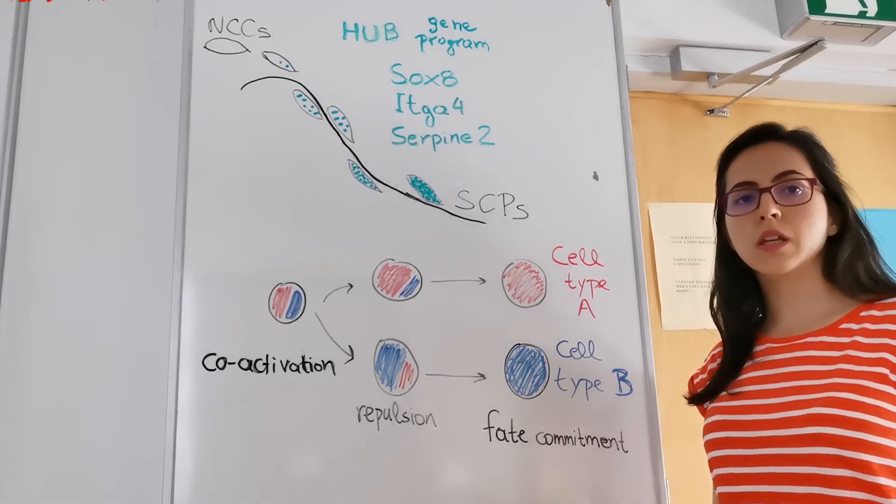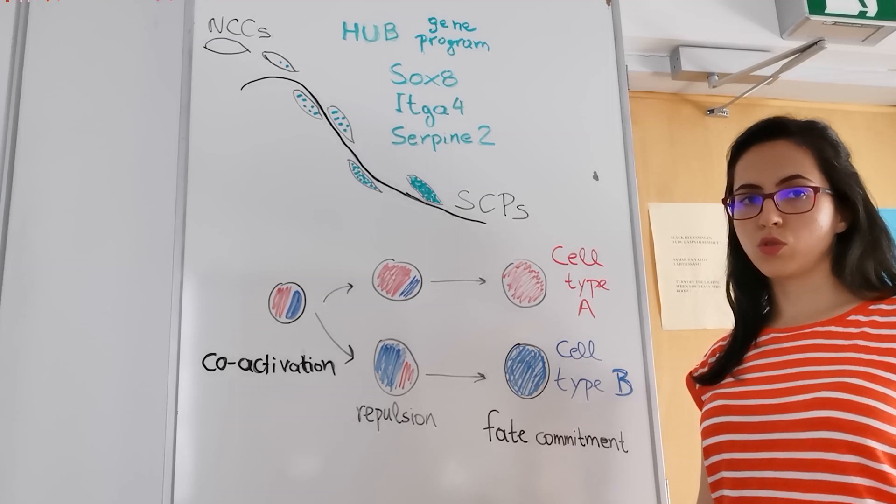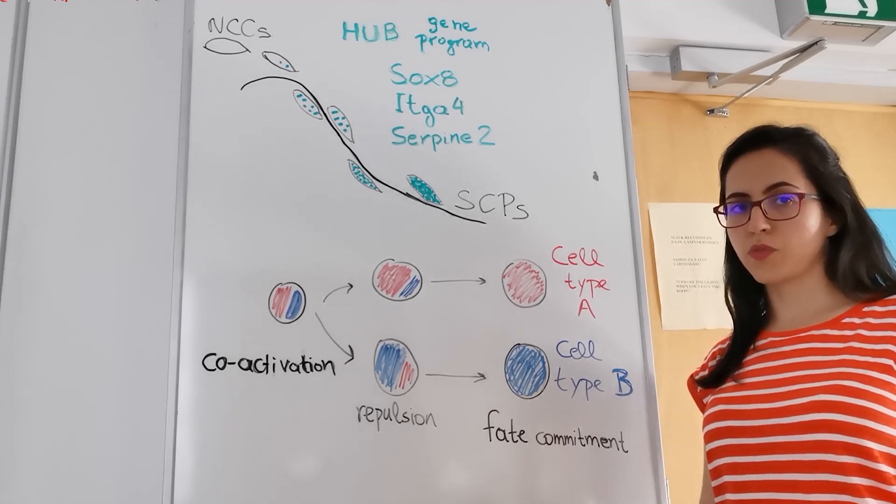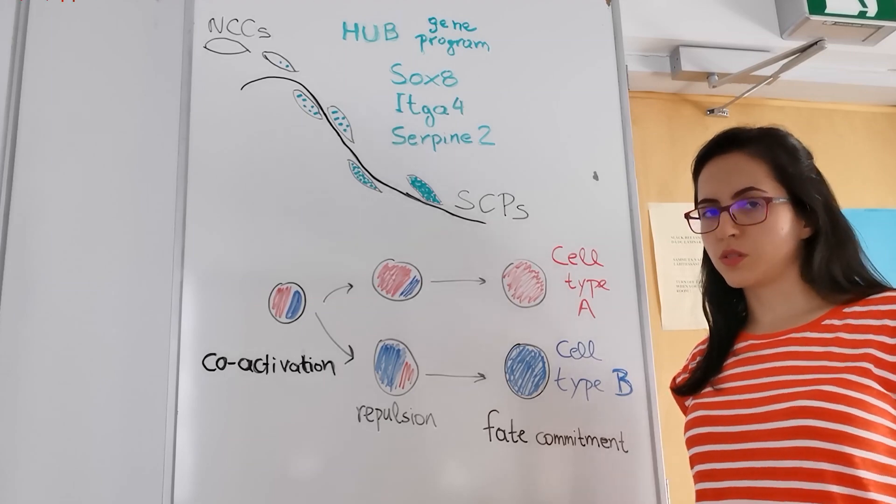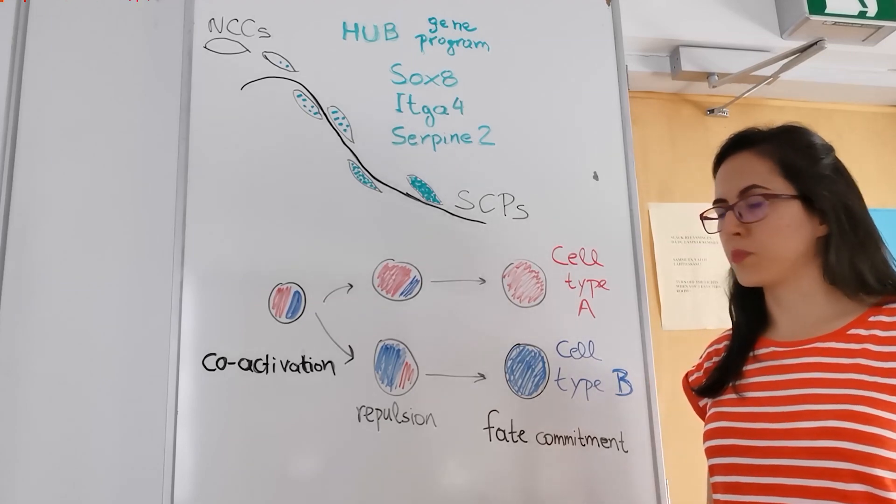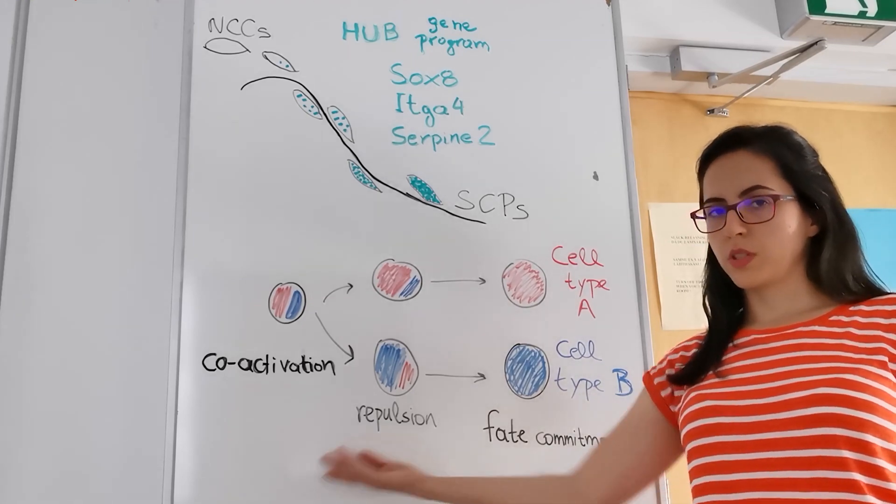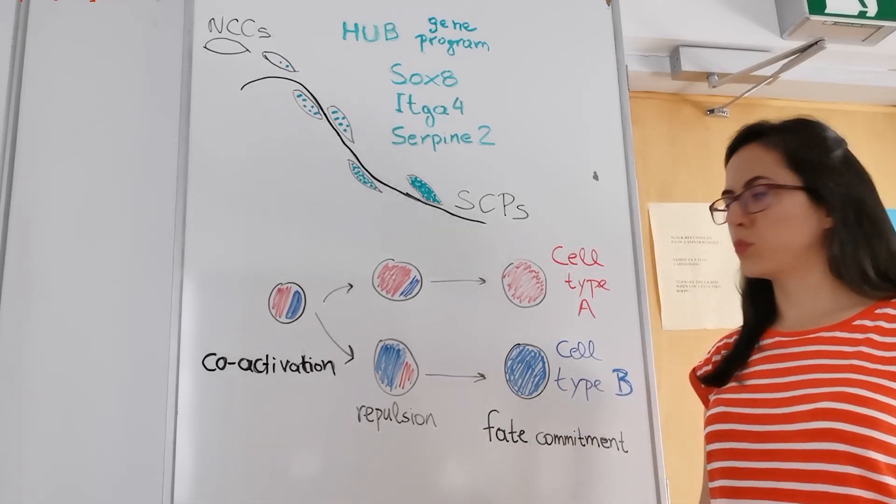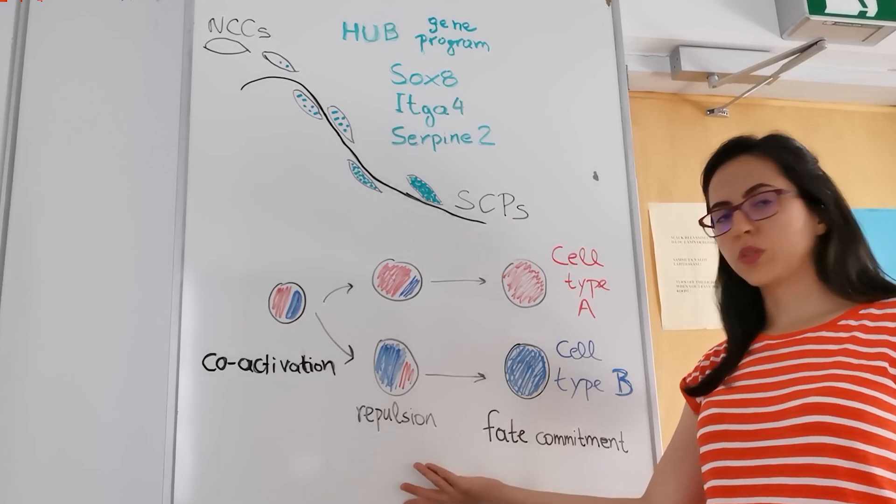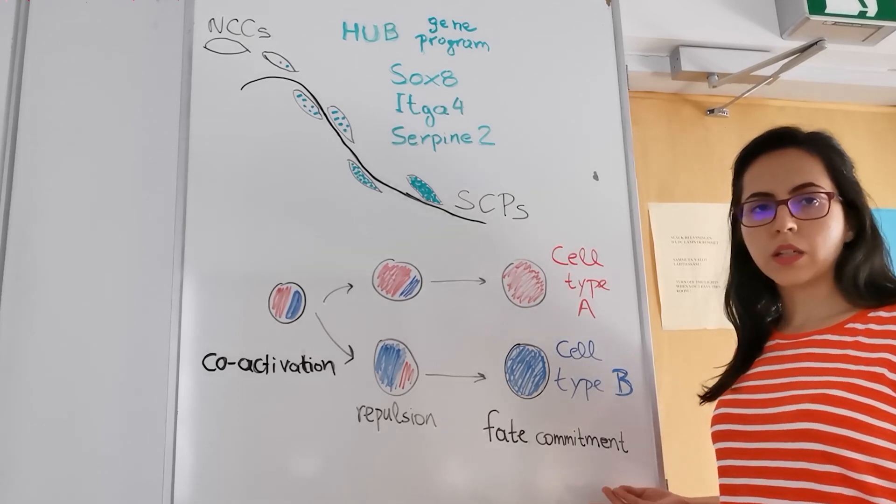We then analyzed the mode of cell fate decisions along the peripheral nerves and Schwann cell precursors, and we found that this takes place through a conserved three-step mechanism. First, this mechanism is initiated through coactivation of two opposing gene modules, the subsequent repulsion, and lastly, fate commitment.